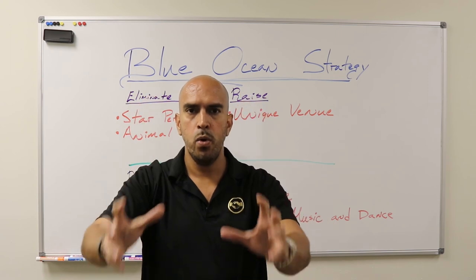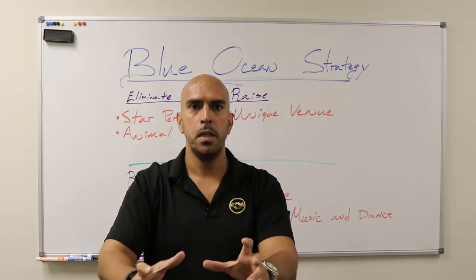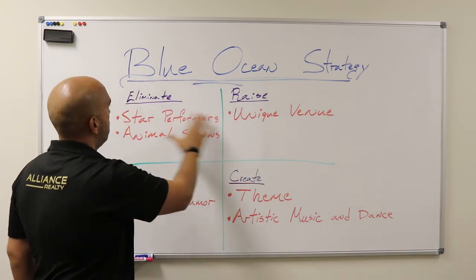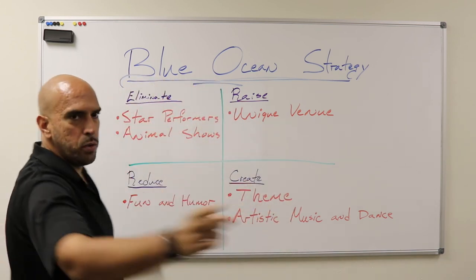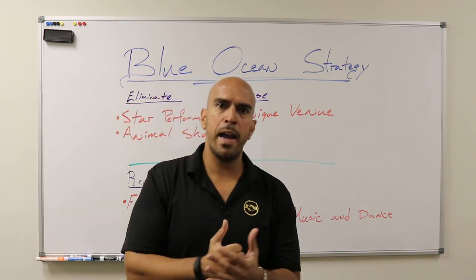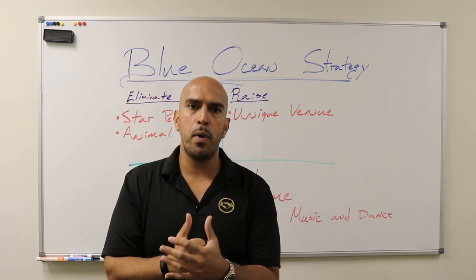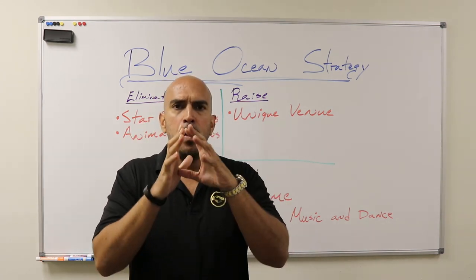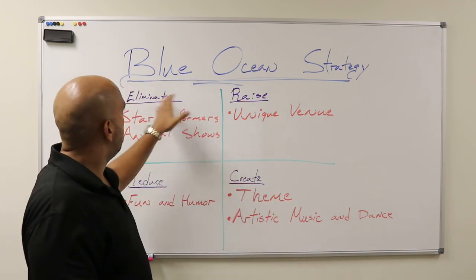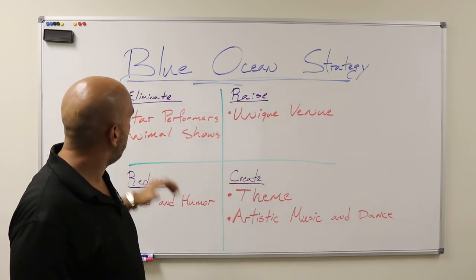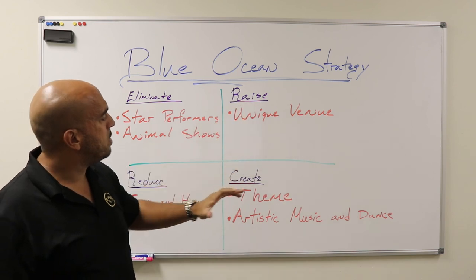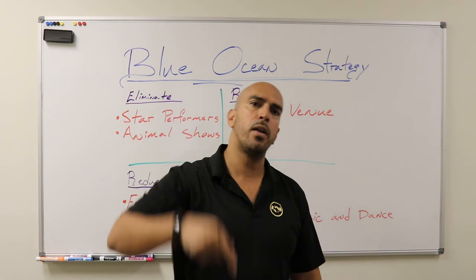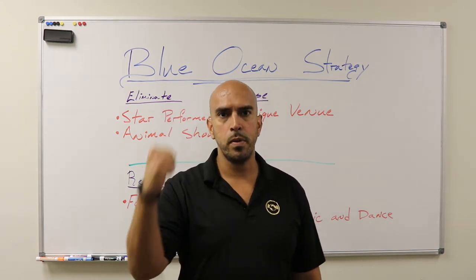So take this quadrant and apply it - whether you're an entrepreneur, a sales person, a business owner, or an executive. Think about what you're going to eliminate, what you're going to reduce, what you're going to raise, and what you're going to create. Check out the book - I highly recommend Blue Ocean Strategy. Look it up at your favorite bookstore. Hope this helps, blessings!